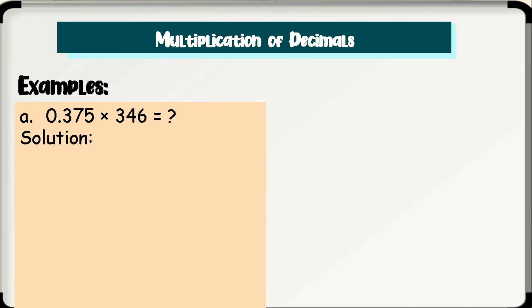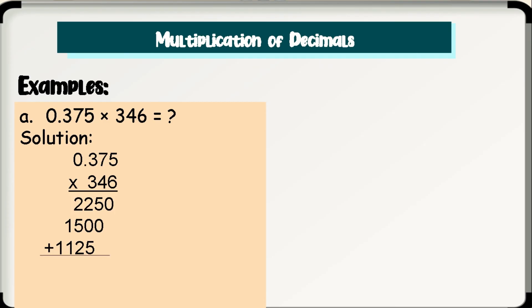Letter A: 0.375 times 346. Solution: multiply 0.375 and 346 as if multiplying whole numbers, giving a product of 129,750. But remember, we have 3 decimal places in our decimal number. So we move the decimal point 3 units to the left, leaving us with 129.750. Therefore, 0.375 times 346 is equal to 129.750.